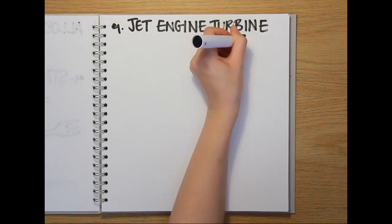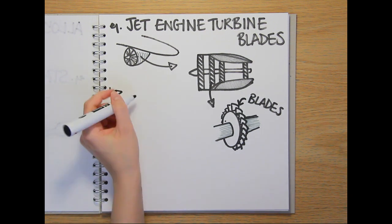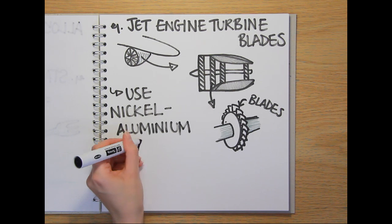Another important use of alloys today is in turbine blades for the jet engines that power the aeroplanes that take us on holiday. Nickel aluminum alloys have been used for this purpose since Frank Whittle's earliest designs in the 1940s,